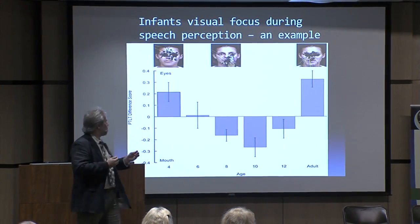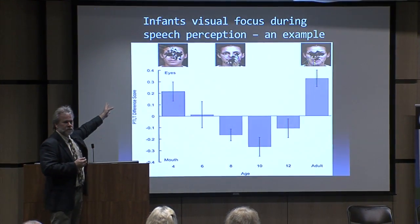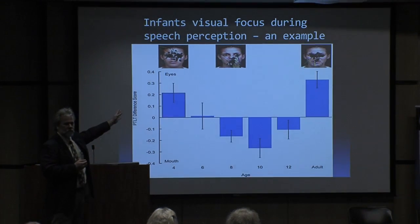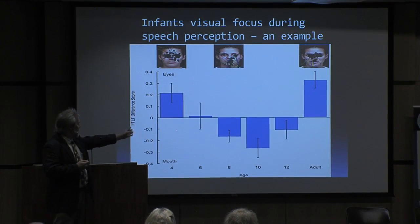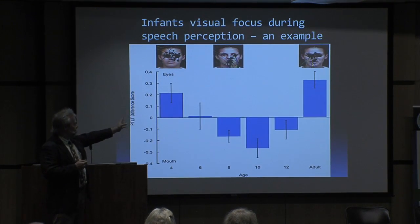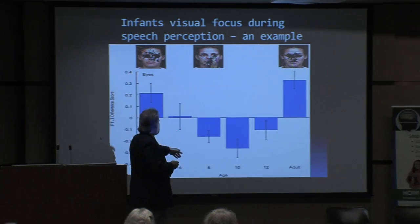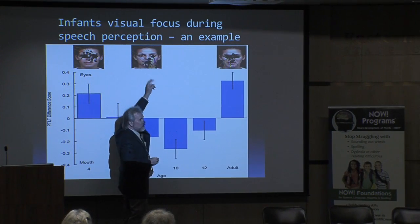In that first age group, where are they focusing? The eyes. At what age is the shift to the mouth? That's around eight months, ten months — right around the age just past six months. They're really looking more at the person's mouth at eight months of age.